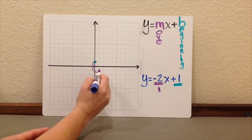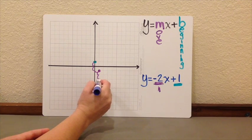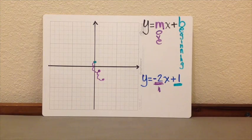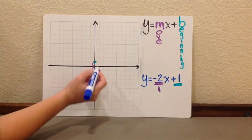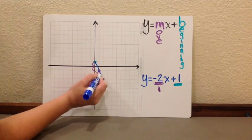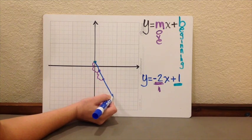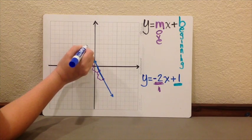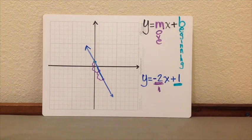I can keep doing this, down 2, 1 to the right. And once that I do this, at least once, I can connect the points with a straight line. And this is my linear function.